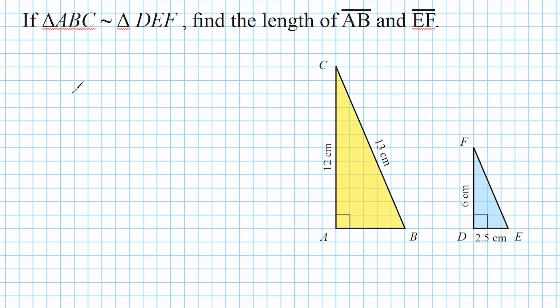Alright, for this problem it says that triangle ABC is similar to triangle DEF. And we have to find the length of line segment AB and EF. So the first thing that we have to do is determine the scale factor. And what we're going to do is start by comparing corresponding sides. So let's take the height of this yellow triangle, which is 12, and the height of this blue triangle, which is 6. Well, to get from 12 to 6, we would have to divide 12 by 2. And to get from 6 to 12, we would have to multiply 6 by 2.